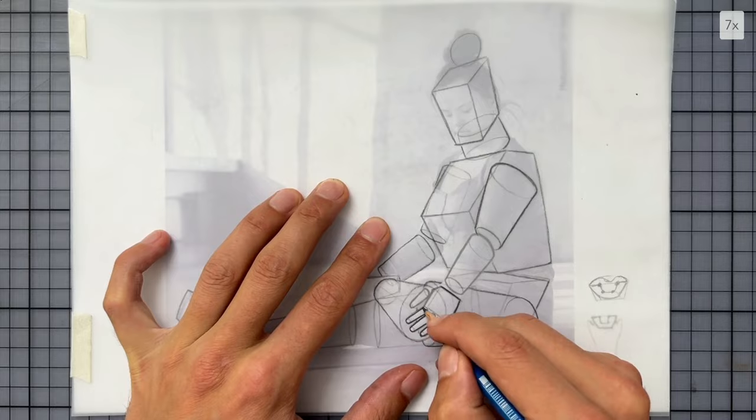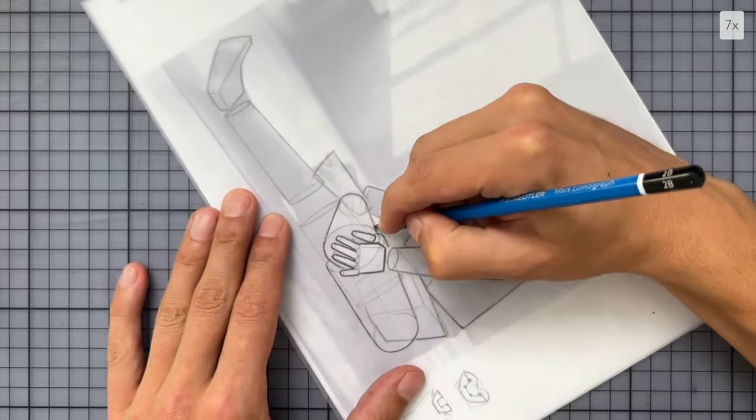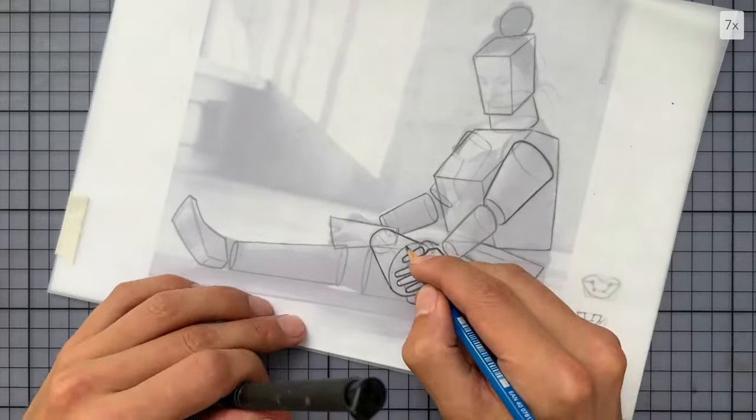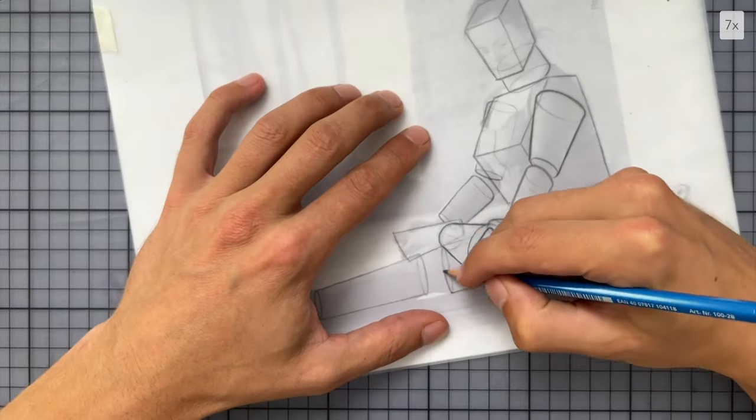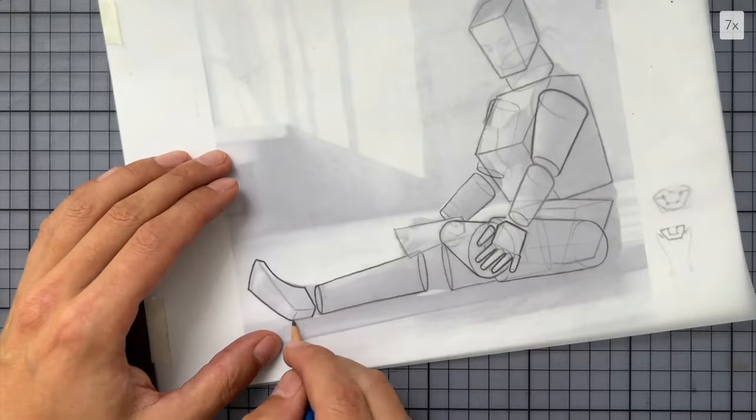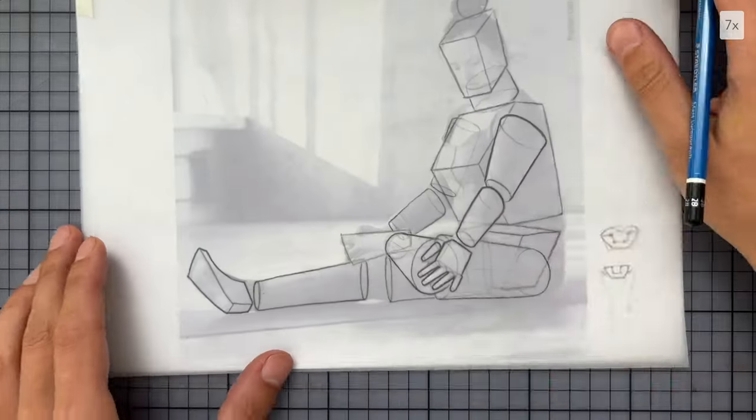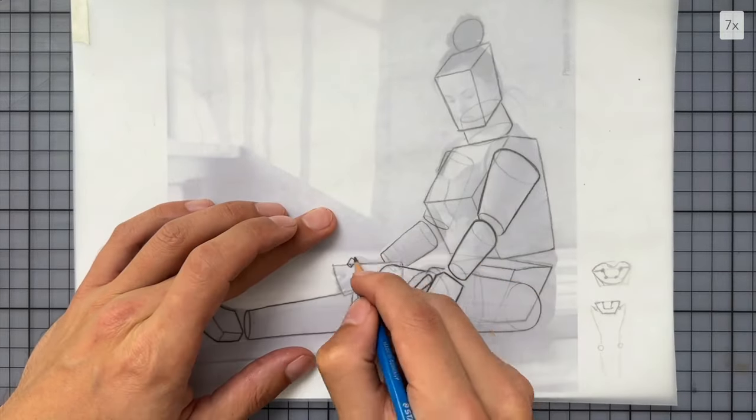And then I'm readjusting all the other lines in my drawing. So they work well in relation to that hand. Another way of thinking about this is that I'm balancing out the line weight of all the lines across the image.